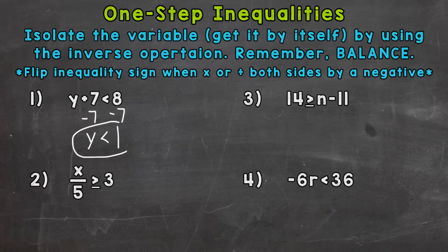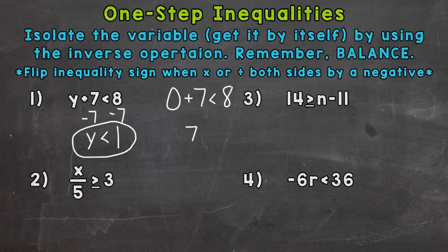So here is our answer: y is less than one. Any number less than one would be a solution to that inequality. Let's test one out — zero is less than one, so let's plug in zero for y. We'll have zero plus seven is less than eight. Zero plus seven is seven, and seven is less than eight. So zero was a solution, along with anything else less than one — an infinite amount of solutions.